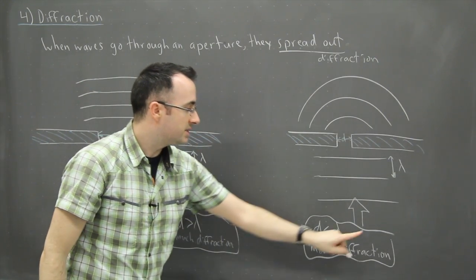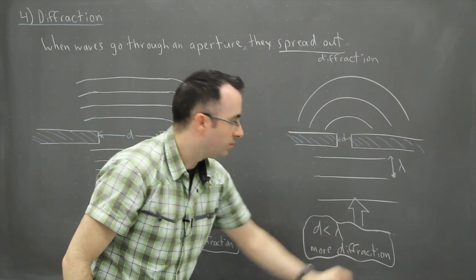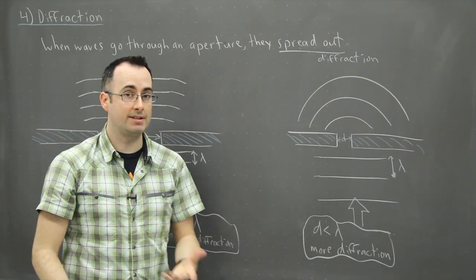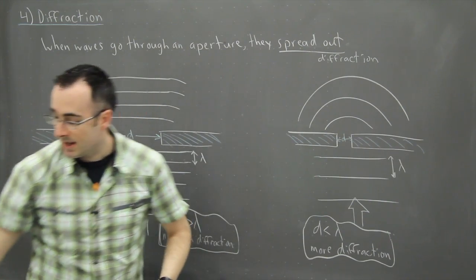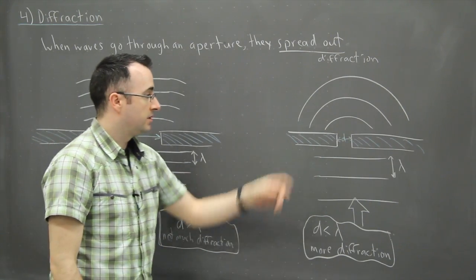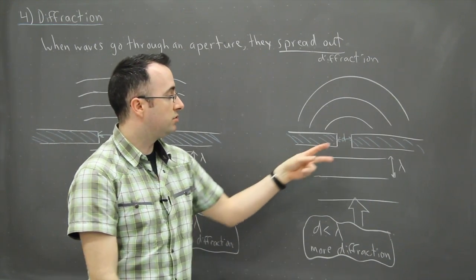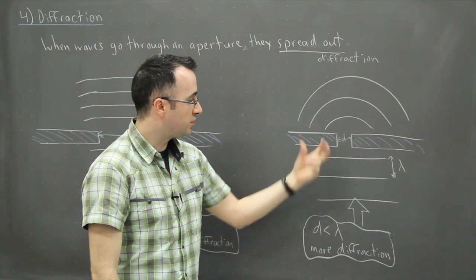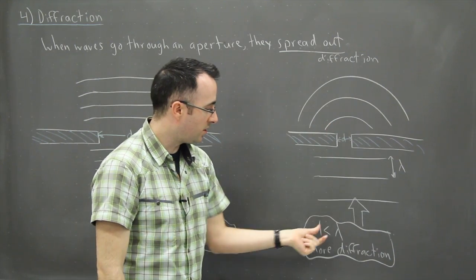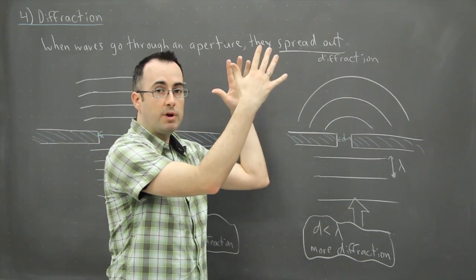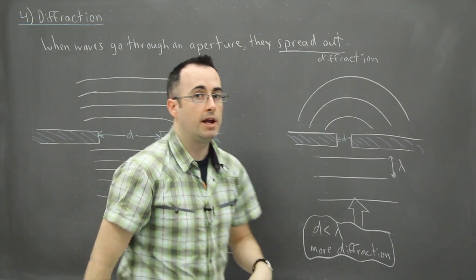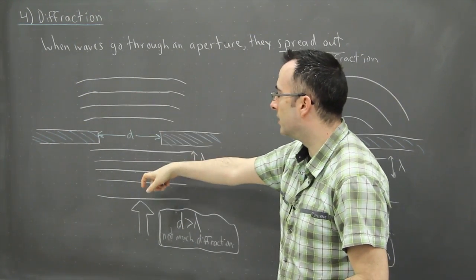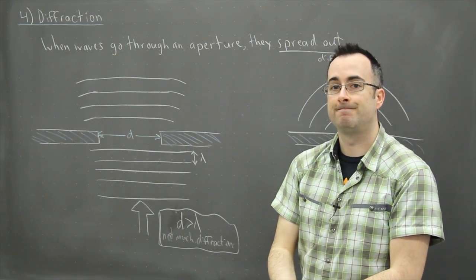So that's how we get more or less diffraction — it's all about the aperture size compared to the wavelength. If the aperture is very small compared to the wavelength, there is more spreading out. If the aperture is large compared to the wavelength, not much spreading out.